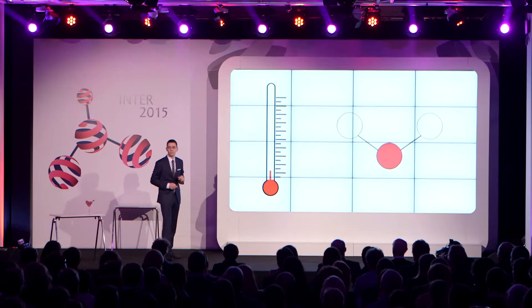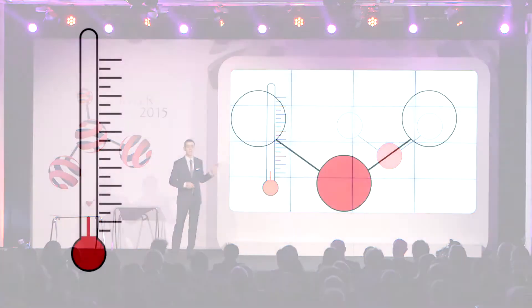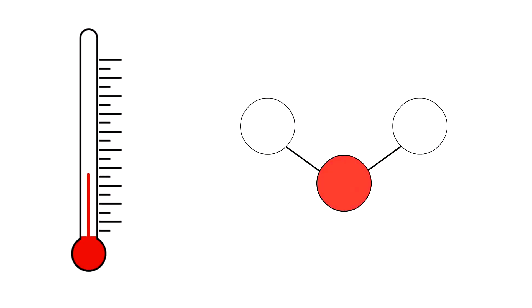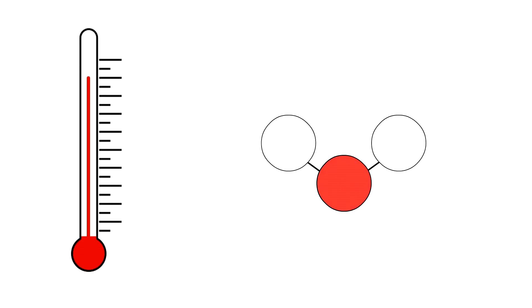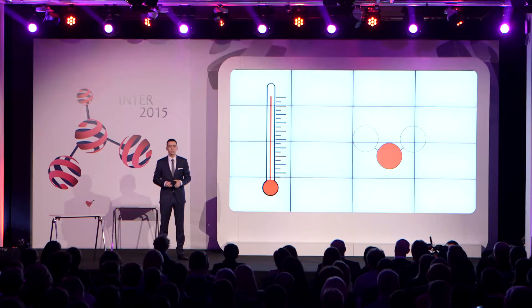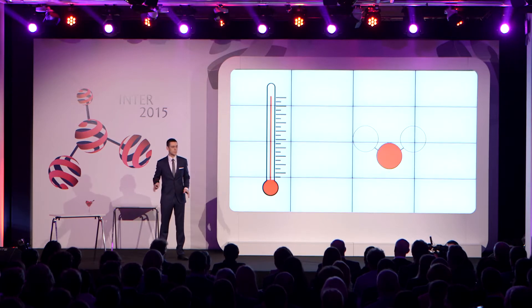Efekt ten występuje we wszystkich znanych nam cząsteczkach chemicznych oprócz wody. W wodzie wraz ze wzrostem temperatury długość wiązań chemicznych w cząsteczce zmniejsza się. Naukowcy, którzy pierwsi zauważyli ten efekt, wysunęli teorię, że to właśnie on odpowiedzialny jest za występowanie efektu Mpemby. Czyli gdyby wiązania w cząsteczce wody były stałe, niezależne od temperatury, to gorąca woda nie zamarzałaby szybciej niż zimna.